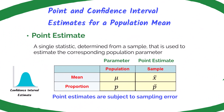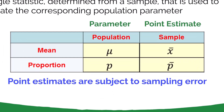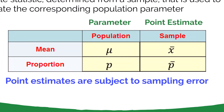Recall in previous chapters where we learned about the sample means and the sample proportions — these are known as point estimates, in that we're using the sample data to estimate what's going on in the population. Here are some familiar symbols: mu for the population mean, x-bar for the sample mean, lowercase p for the population proportion, and p-bar for the sample proportion.